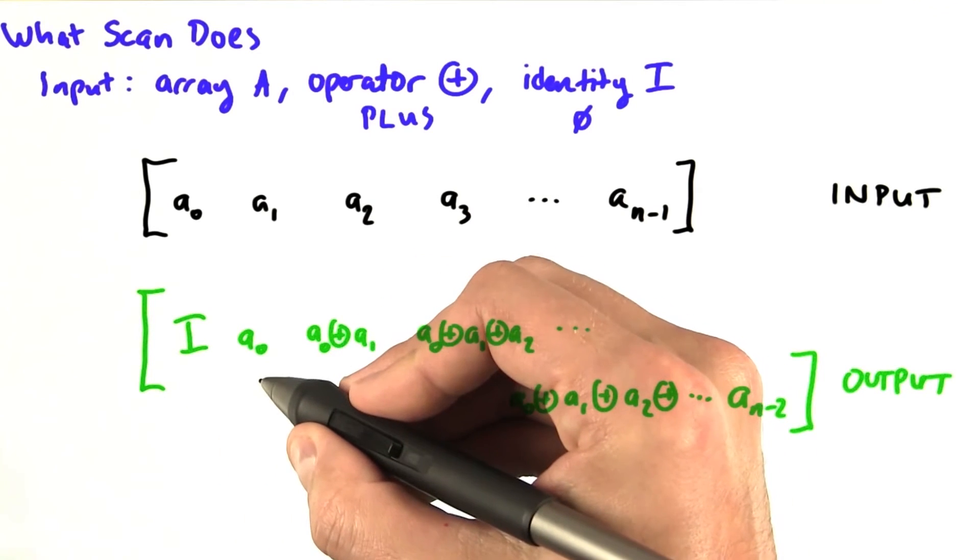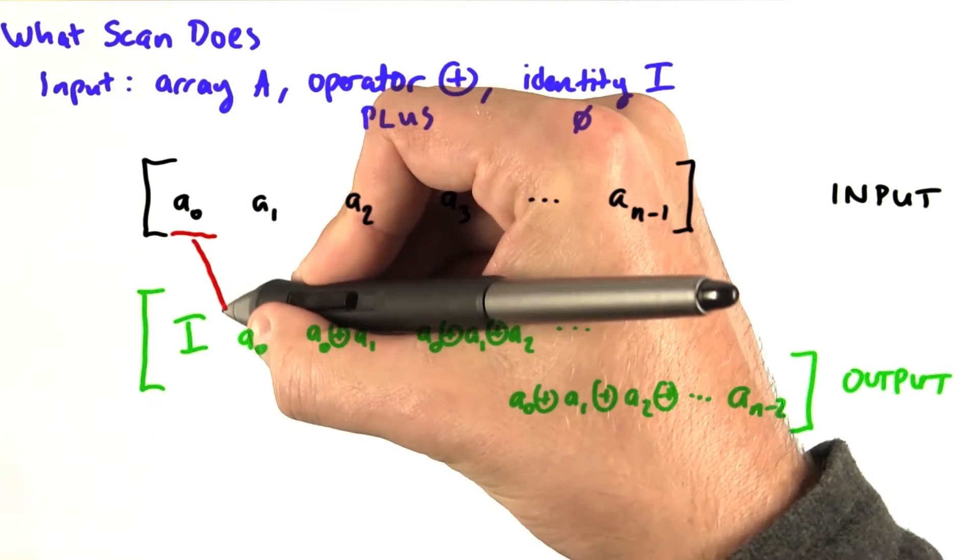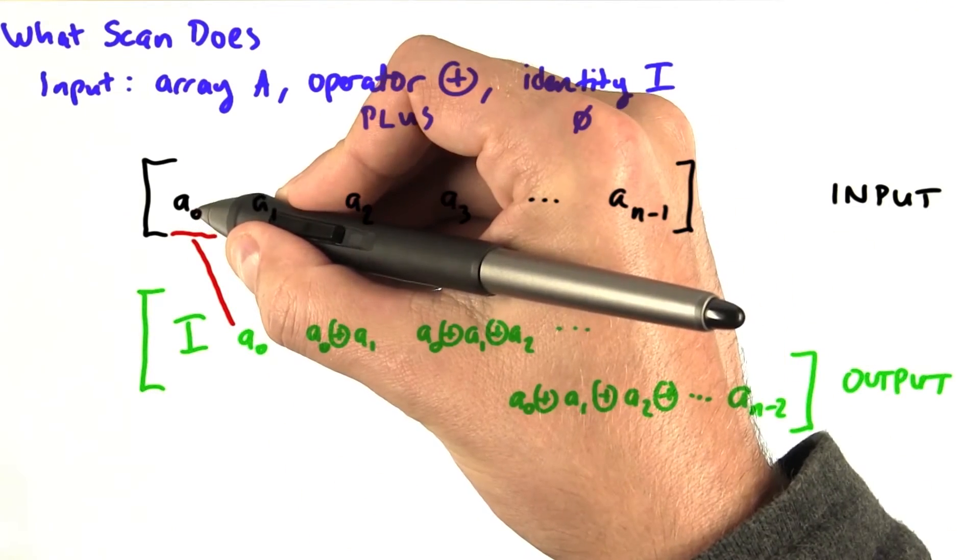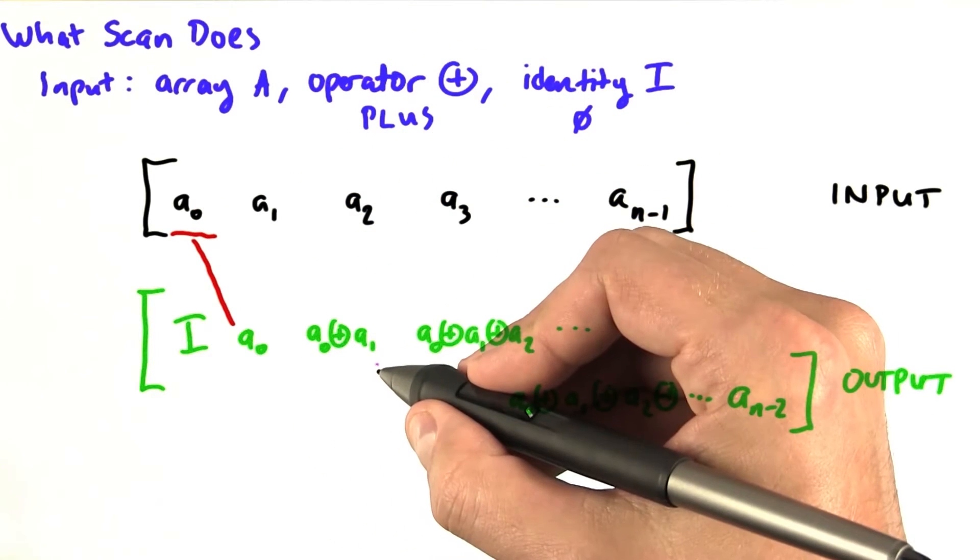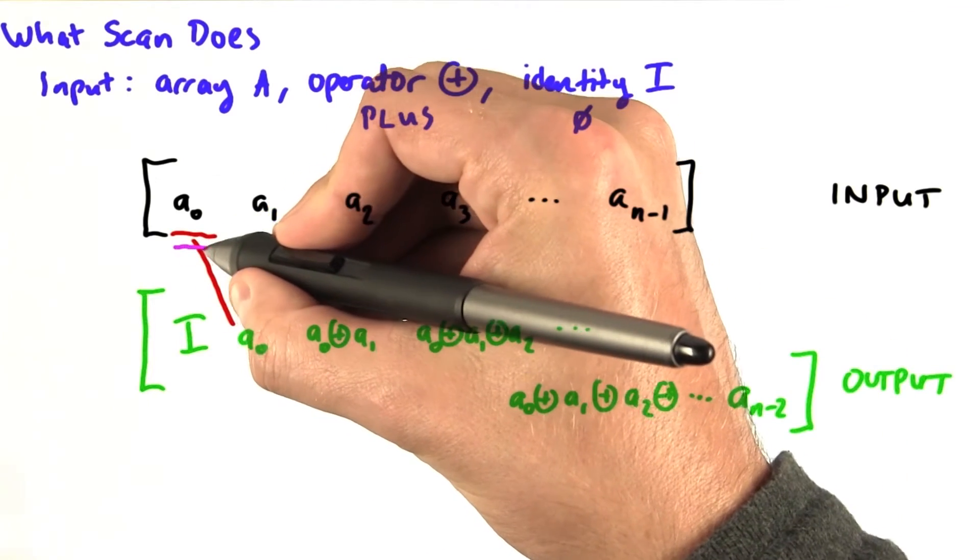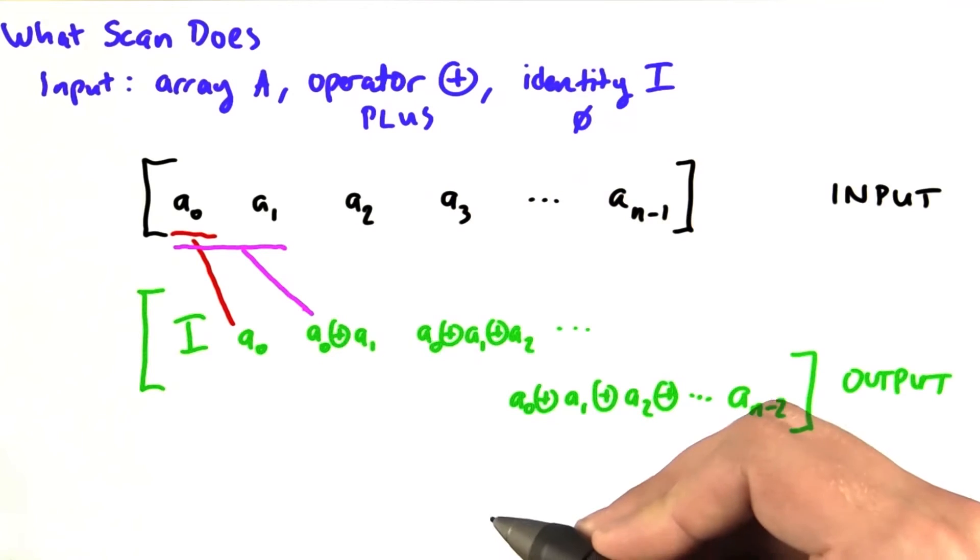The output at the first position here is the sum of all the elements that come before it. In this case, there's one element that comes before it, so that's copied over to the output. The output in the third element here is the sum of all the elements that come before it. In this case, the sum of a0 and a1.